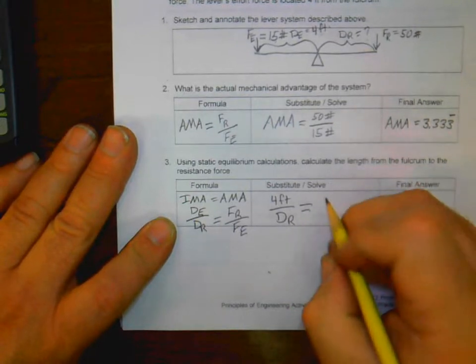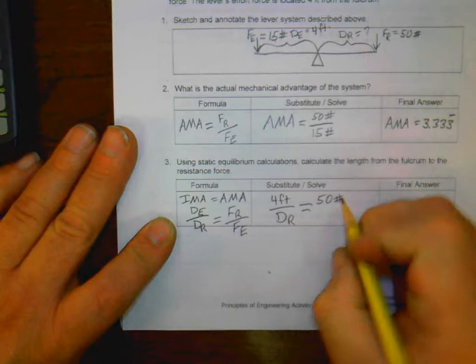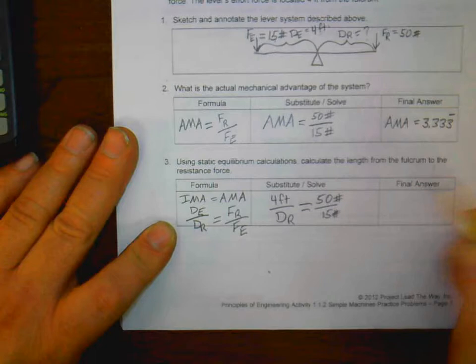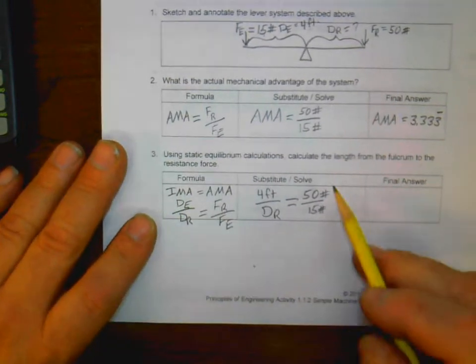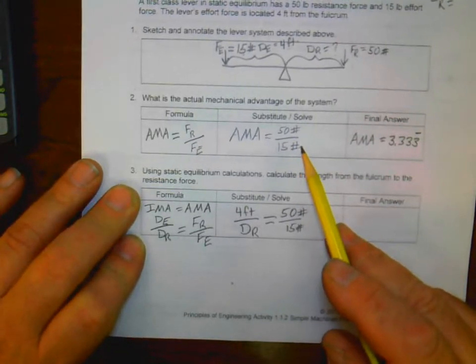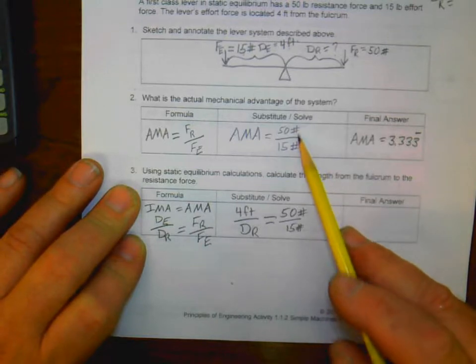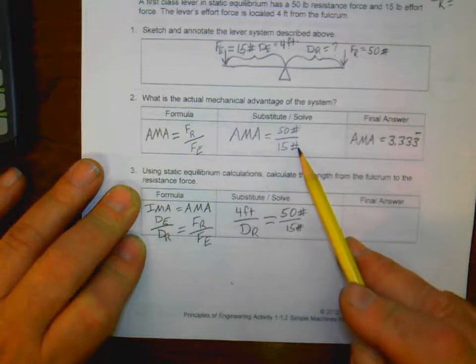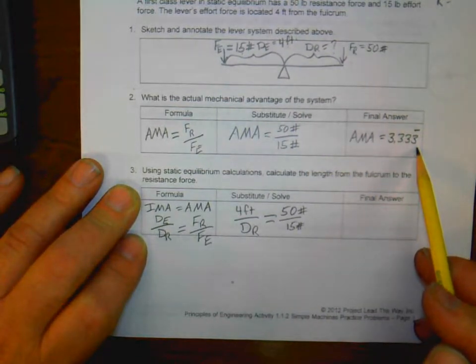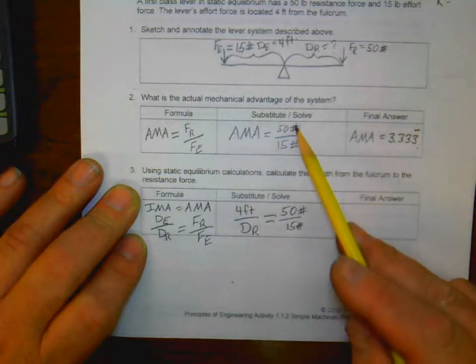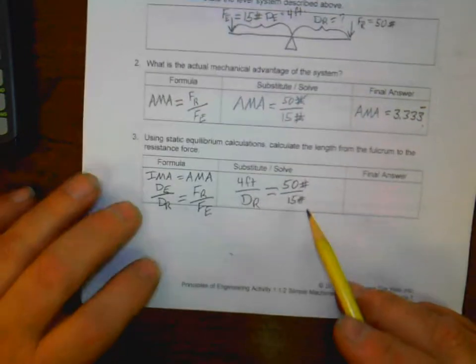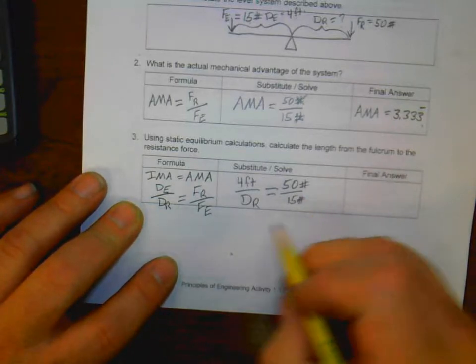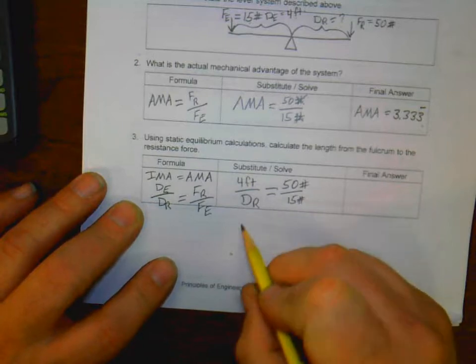Now, notice, by the way, going back up to number two here, when we have 50 pounds divided by 15 pounds, our unit cancels out. Actual mechanical advantage has no unit on it, so these canceled out up here. So don't forget that. We've got the same thing going on here, except we're going to cross multiply. So we get, if we cross multiply, we end up with four feet times 15 pounds equals 50 pounds DR.